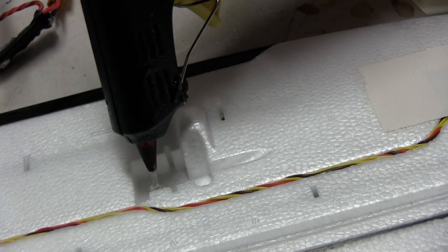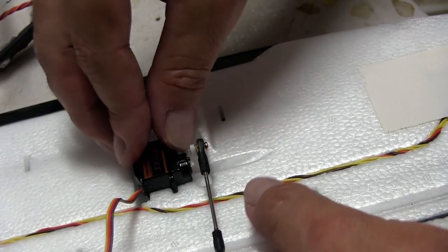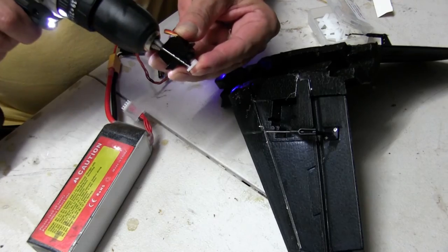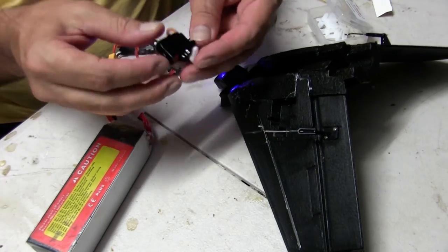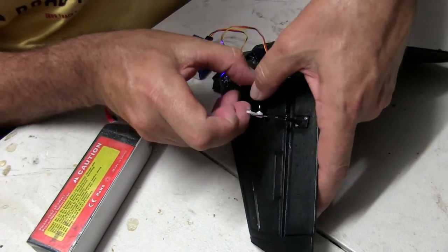So now that we've got everything centered. Basically centered we'll fine tune it later. We'll hot glue all the servos in the four of them. And hook up all the control horns and connecting rods.